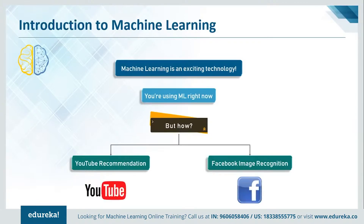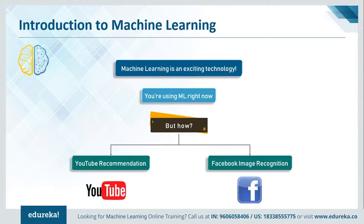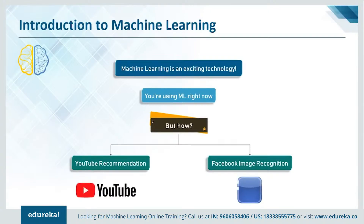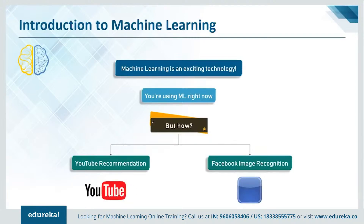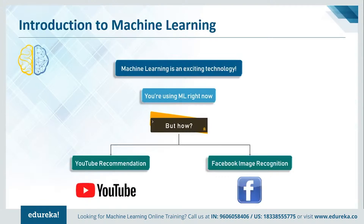Similarly, consider this: you and your friends went on a vacation, clicked a lot of pictures, and uploaded them on Facebook. Wouldn't it take so much time just to find your friends' faces and tag them in each and every picture? Well, Facebook is intelligent enough to actually tag people for you. Machine learning has been so subtly integrated into our lives that we do not even notice its presence.